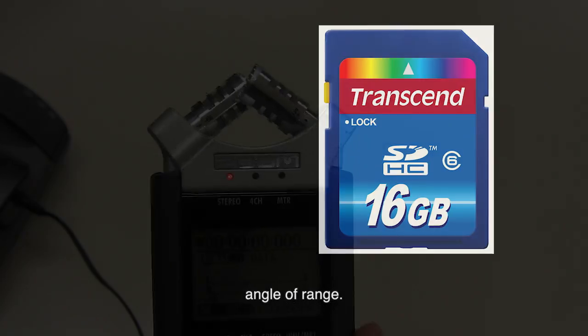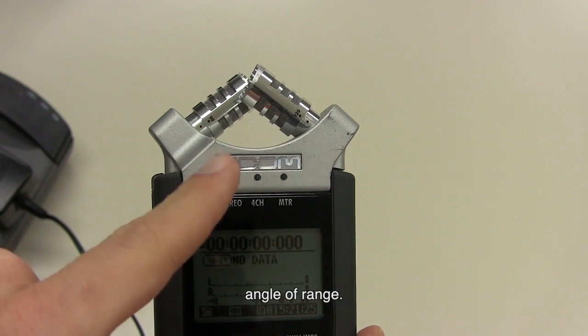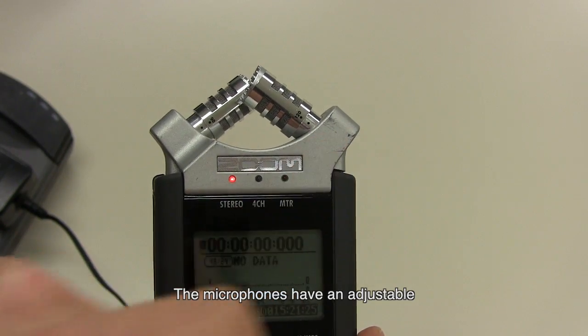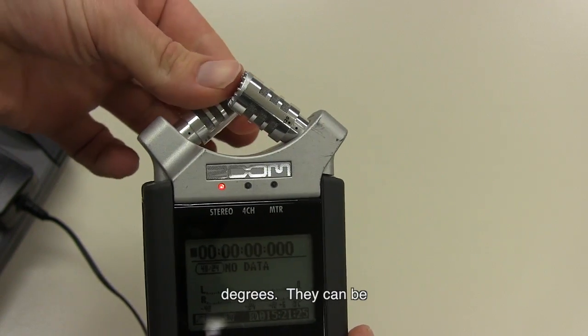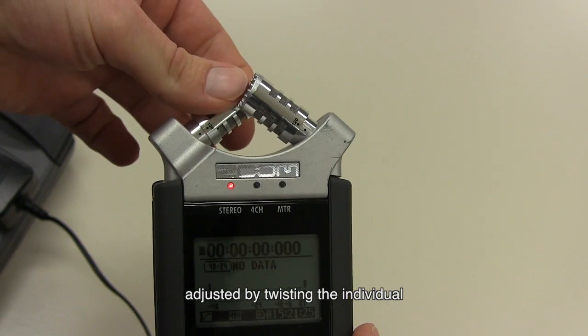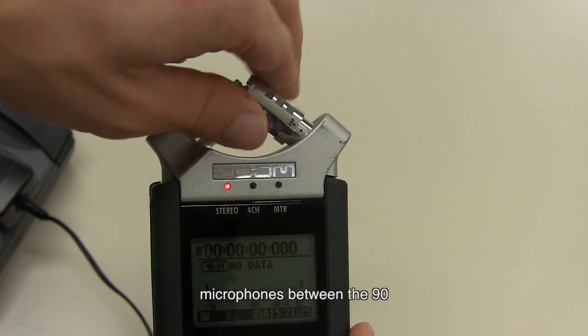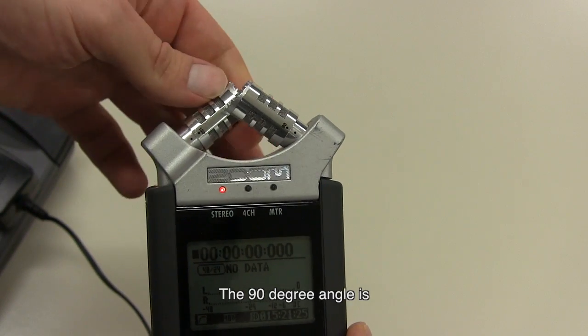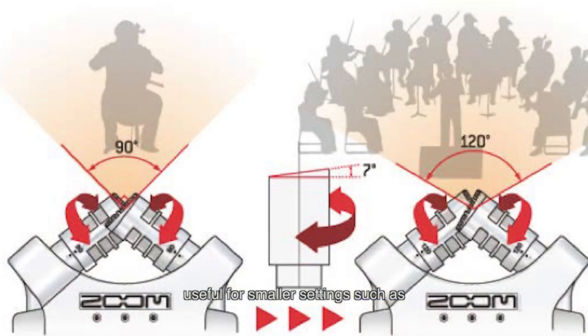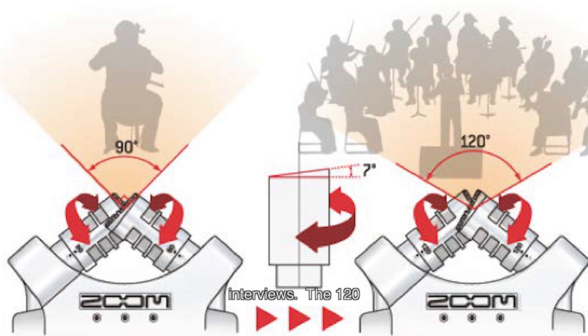The other thing to check before hitting the record button is the microphone angle of range. The microphones have an adjustable range of between 90 and 120 degrees. They can be adjusted by twisting the individual microphones between the 90 and 120 degree markings on the sides. The 90 degree angle is useful for smaller settings such as interviews. The 120 degree angle is useful for larger events such as conferences and concerts.